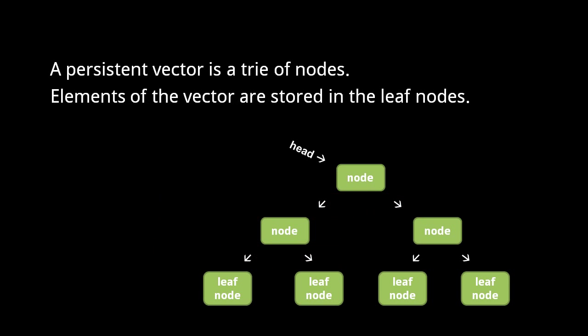Without going into all the details, vectors are structured as a tree of nodes, with the actual elements stored in the leaf nodes. The vector object itself simply references the head node of the tree. A simple algorithm is used to traverse from the head directly down the chain to an element of a particular index.